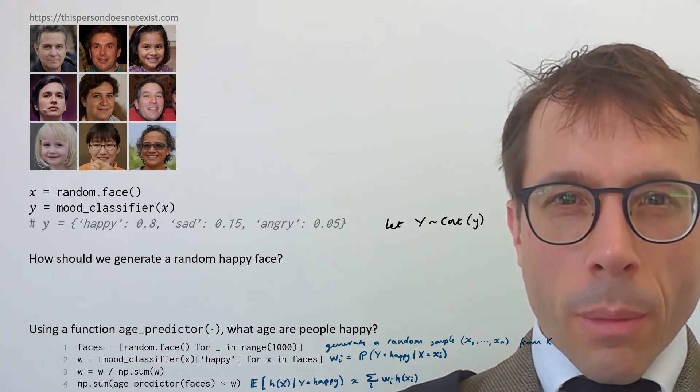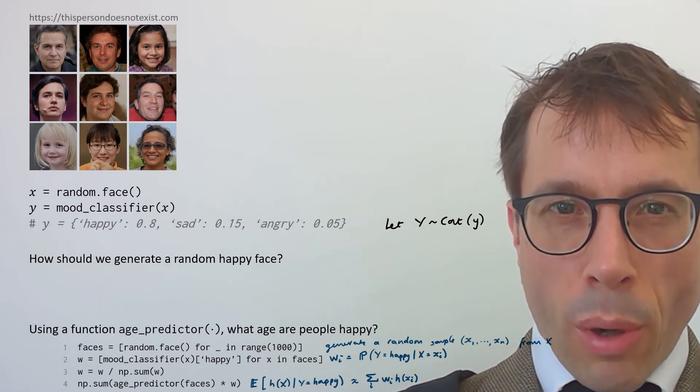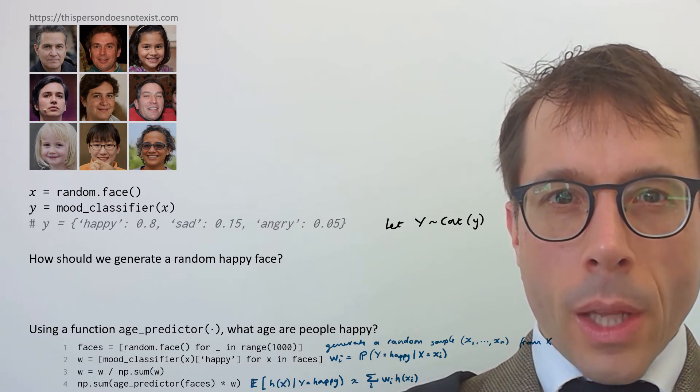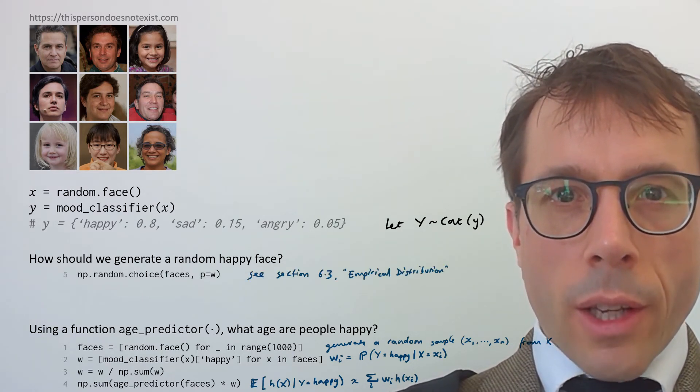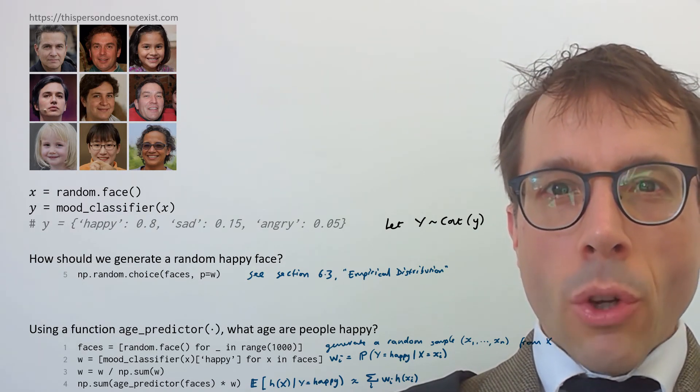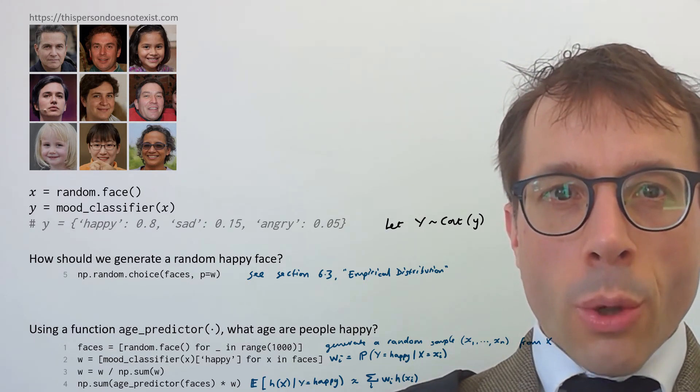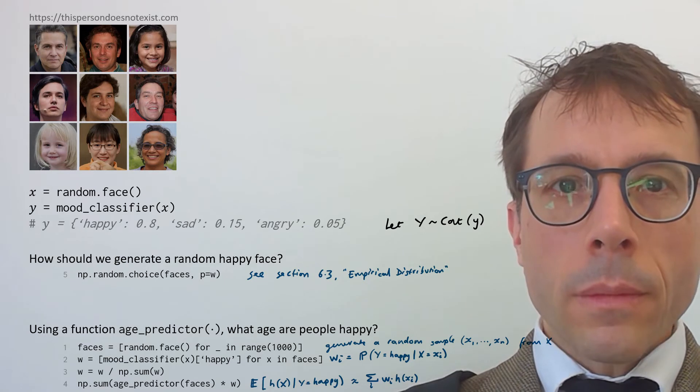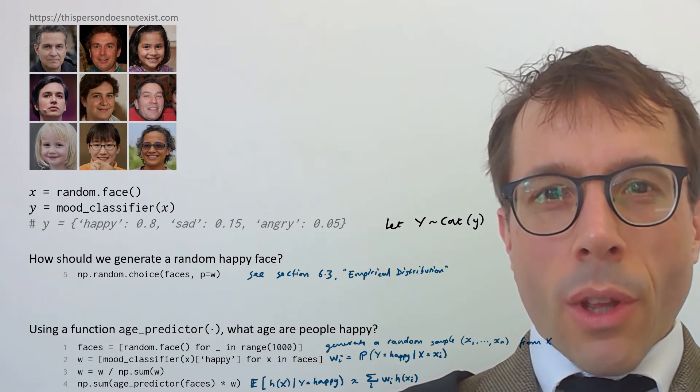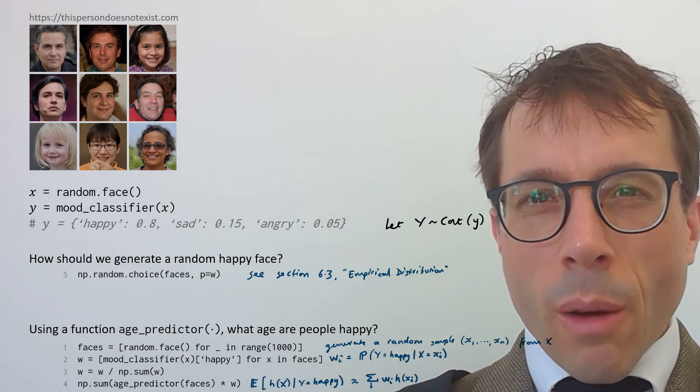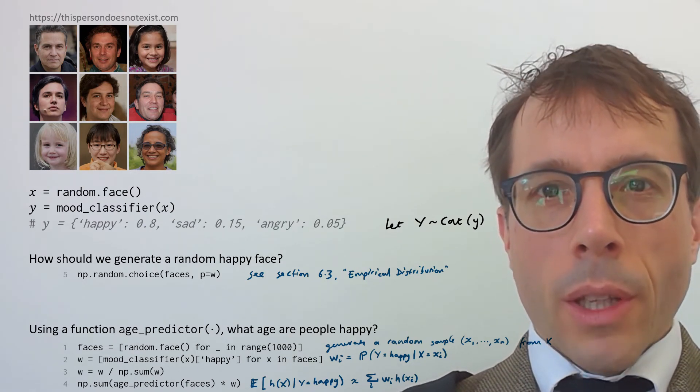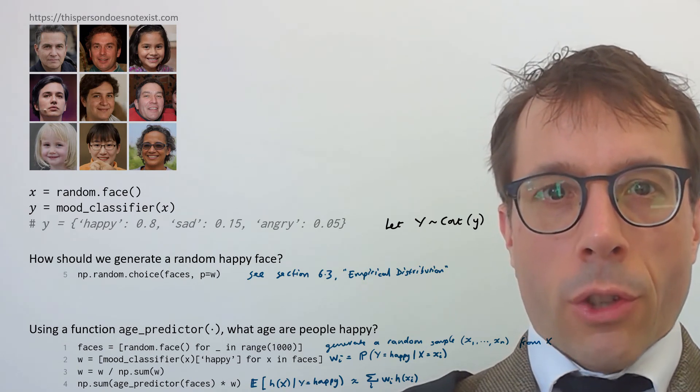But the other question is actually something a bit new. It's not asking for an expectation or a probability. It's asking, how should we generate a random happy face? For now, I'm just going to state the answer. We generate a sample of faces, as in the second question, and then we choose one of the faces at random, but not uniformly at random. Instead, use w as the weights for the choice. Maybe it's obvious to you that this is the sensible thing to do. Or maybe it's one of those things that's on the tip of your brain. It seems nearly obvious, but you can't quite pin down exactly why. The reason why it's the right thing to do is something that we're going to come back to later on in this course in section 6.